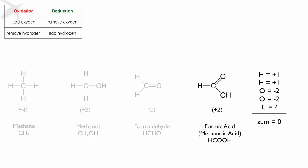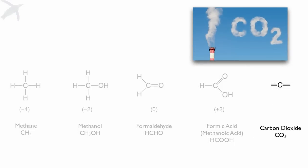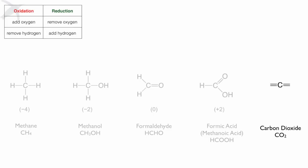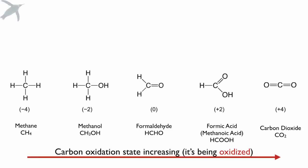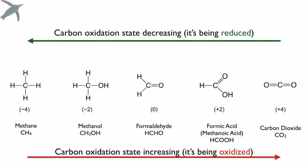Can carbon be more oxidized than this? Yes. We can take out all the hydrogens and we make carbon dioxide, CO2. Let's calculate the oxidation state of carbon in carbon dioxide. We add the oxygens, do the math, and for the sum to equal zero, carbon must be +4. As you add oxygens and remove hydrogens, carbon's oxidation state is increasing. On the other hand, if you go the other way, carbon is being reduced.